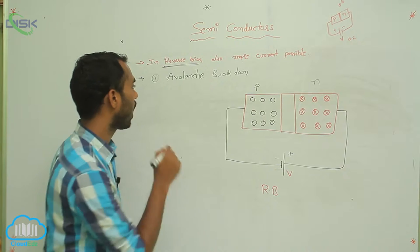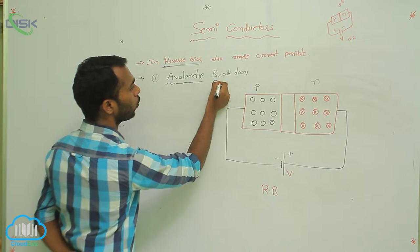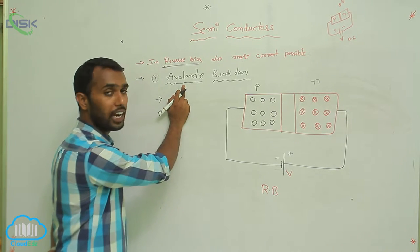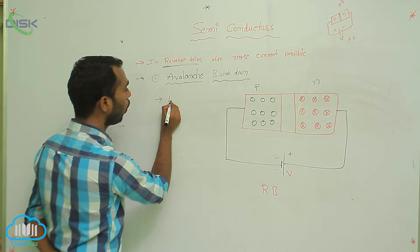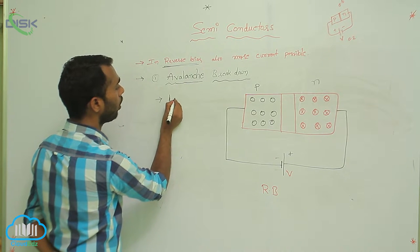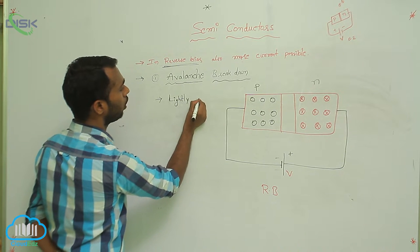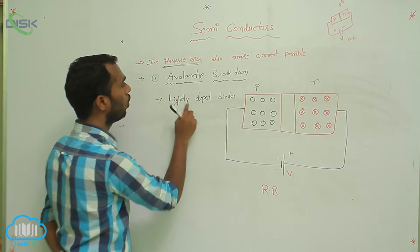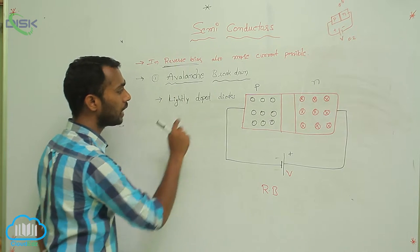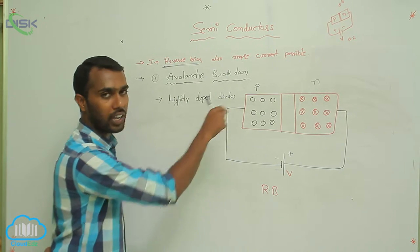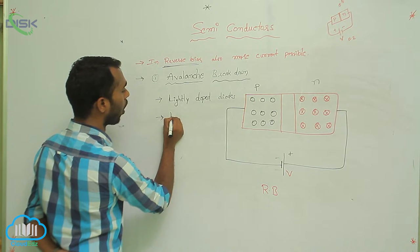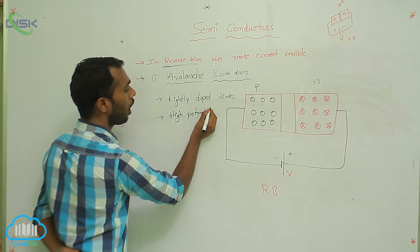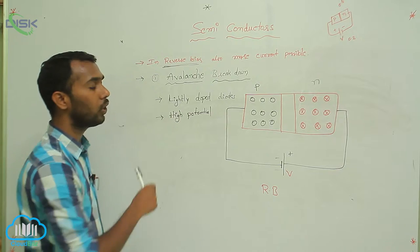In avalanche breakdown, we have to remember two points. First, avalanche breakdown is possible at lightly doped diodes — meaning less impurities are added. Second, it is possible at high potential. So the conditions are: lightly doped and high potential.